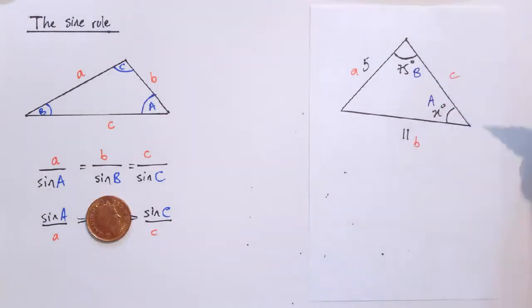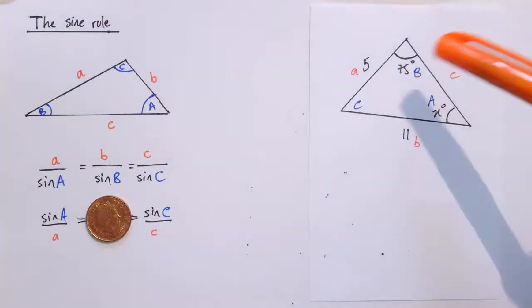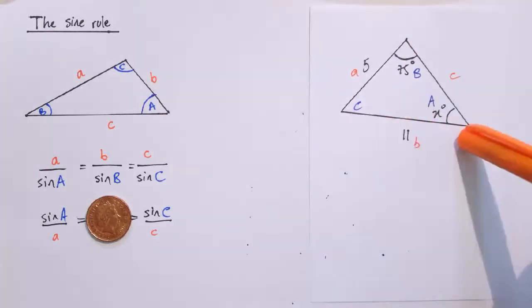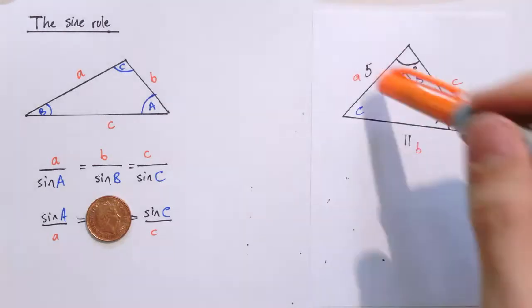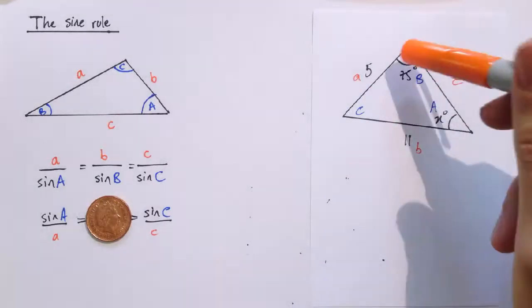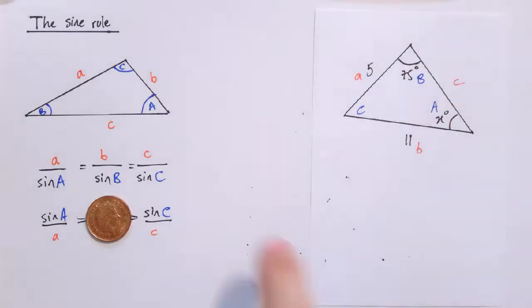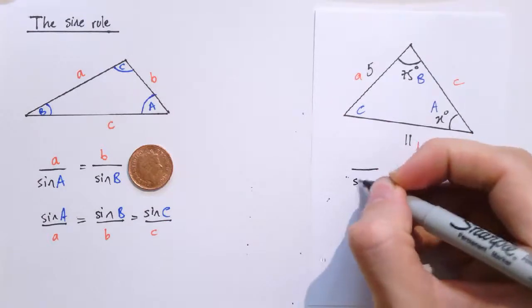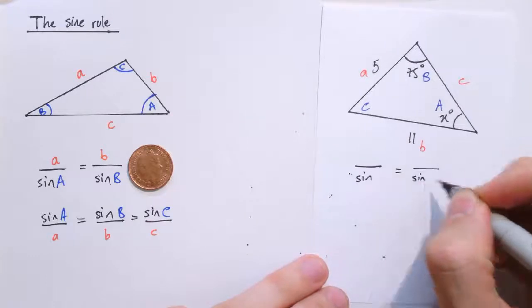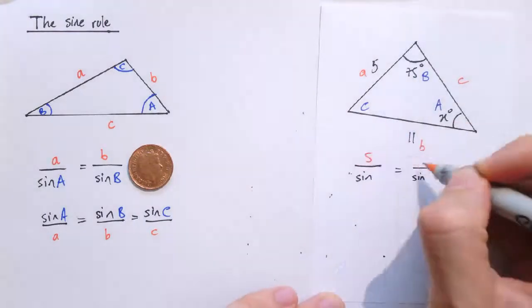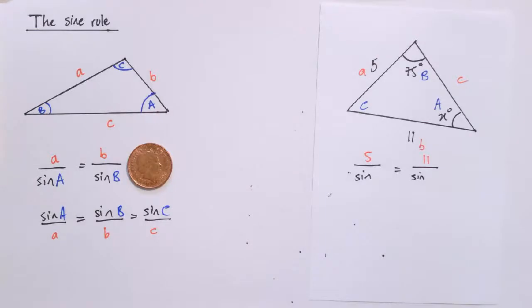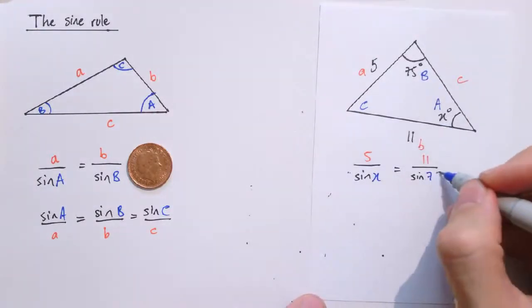Doesn't really matter which one I call A, B and C. So let's have A, B and C like that. And that means that angles A, B and C are A, B and C here. So what we've got is an angle and its opposite side. And we've got a side and we're looking for its opposite angle. And that's really what we need for the sine rule to be useful. We need two pairs of angle and opposite side with just one missing piece of information. So I've got three out of the four things here.